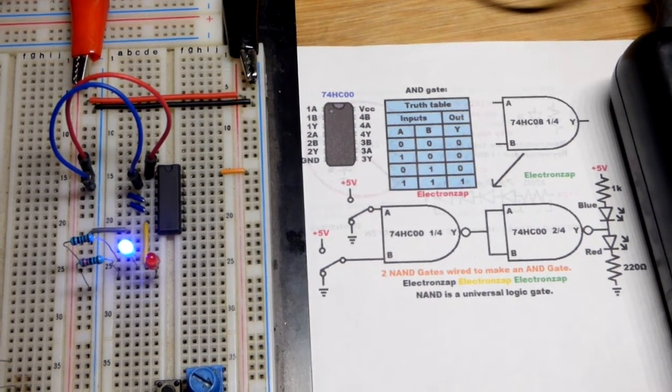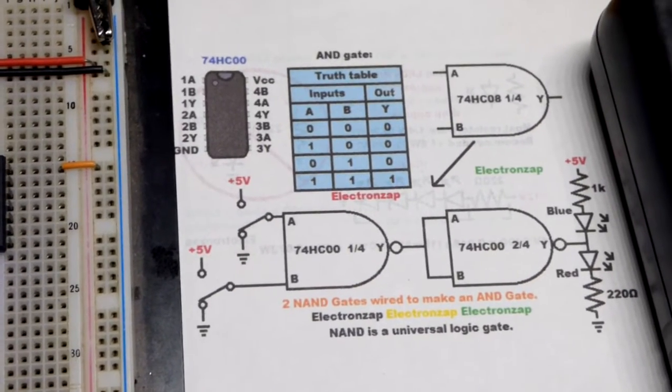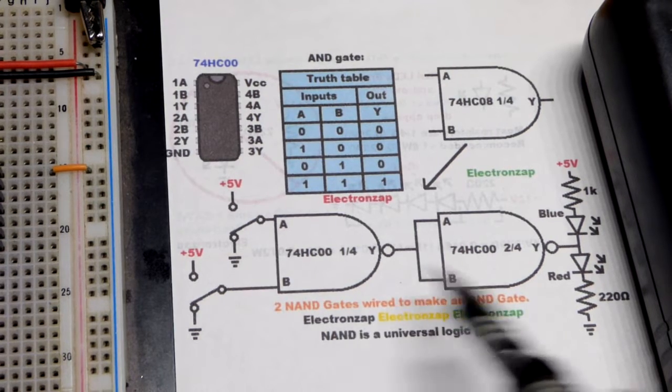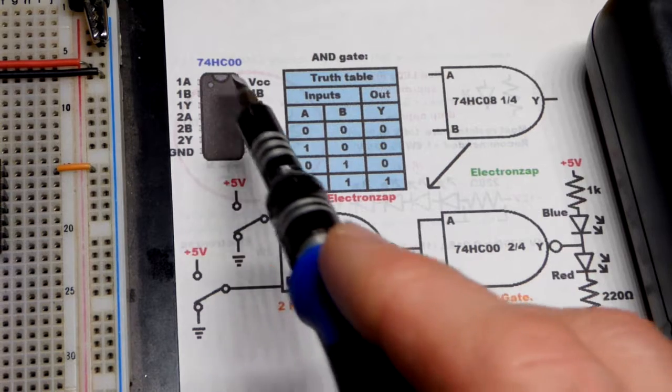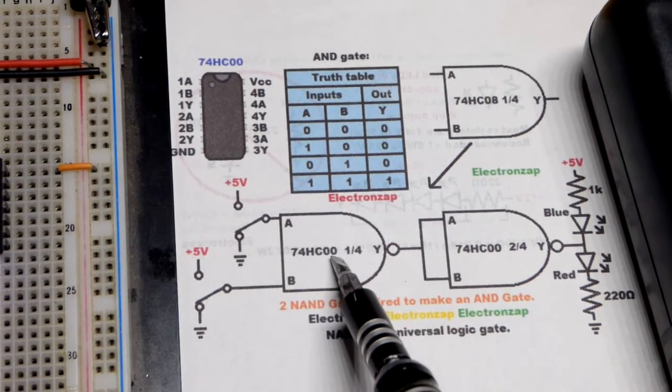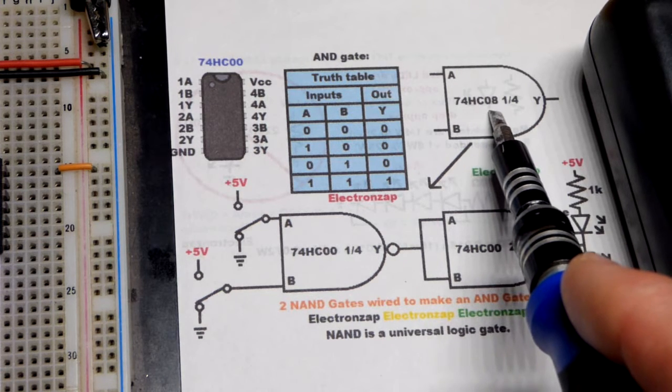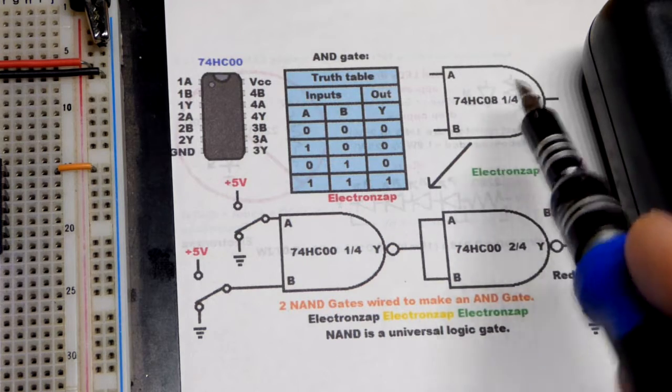Now, last video I did, we were using a 4000 series integrated circuit which had NOR gates, which are like the NAND gate where you can combine them to make any other logic gate. But with the 7400 series, I'm using the 7400 integrated circuit that has NANDs.